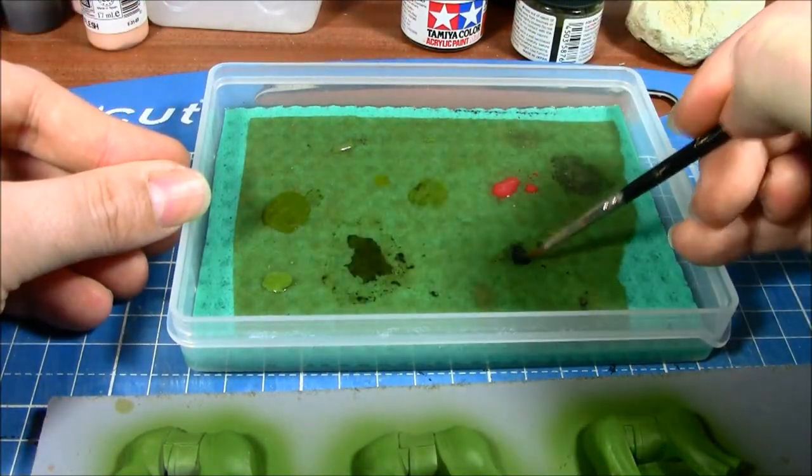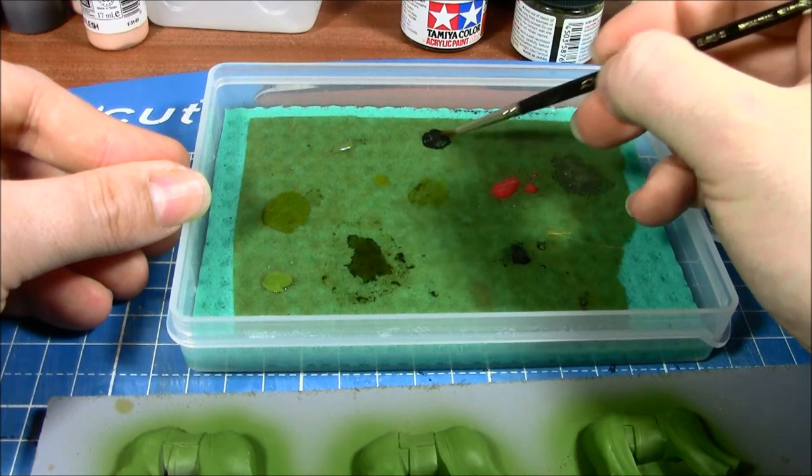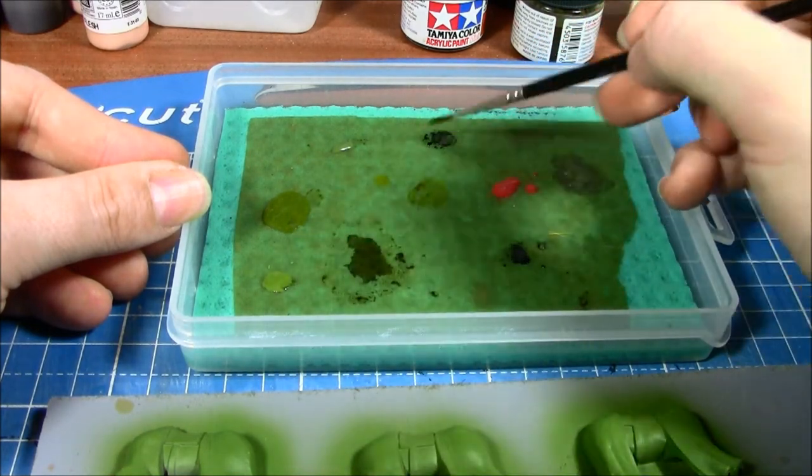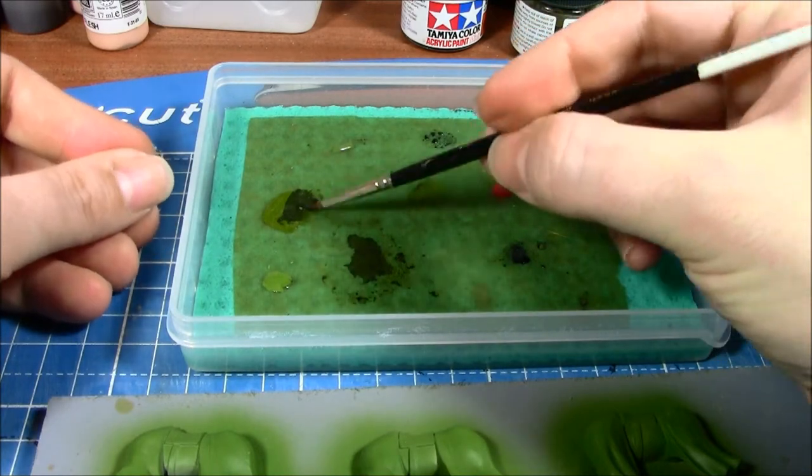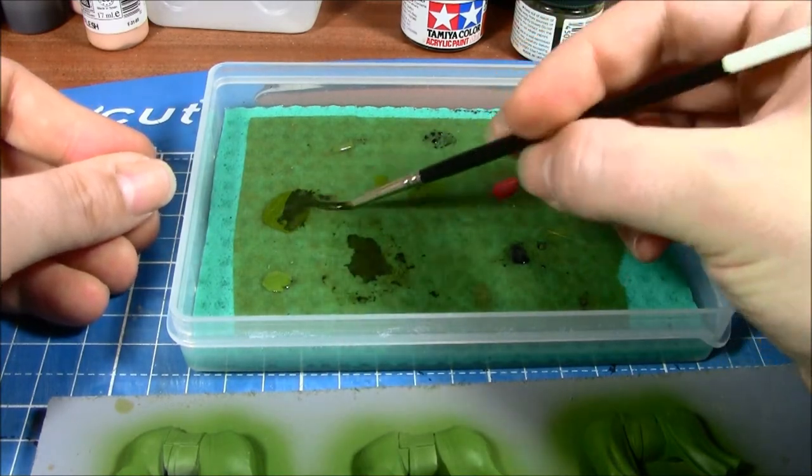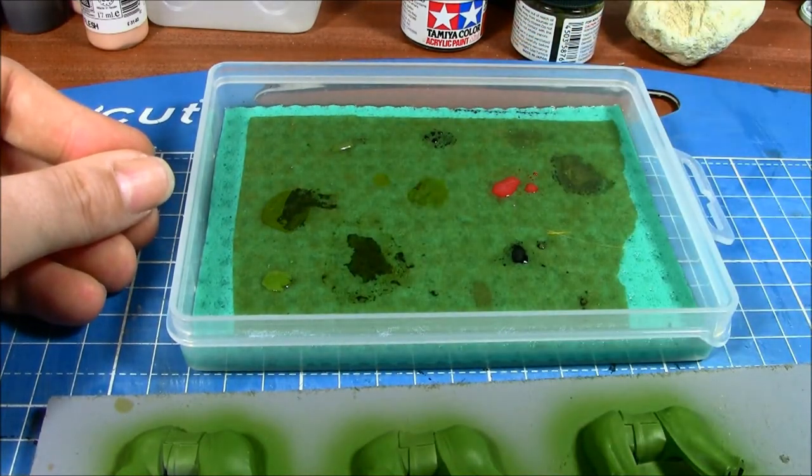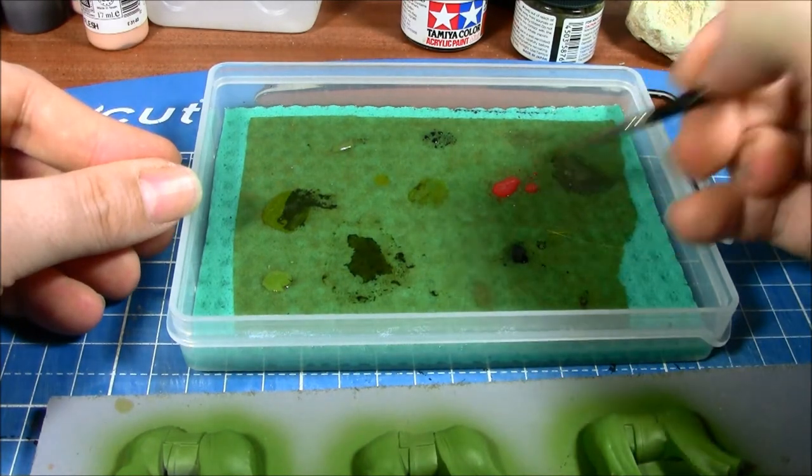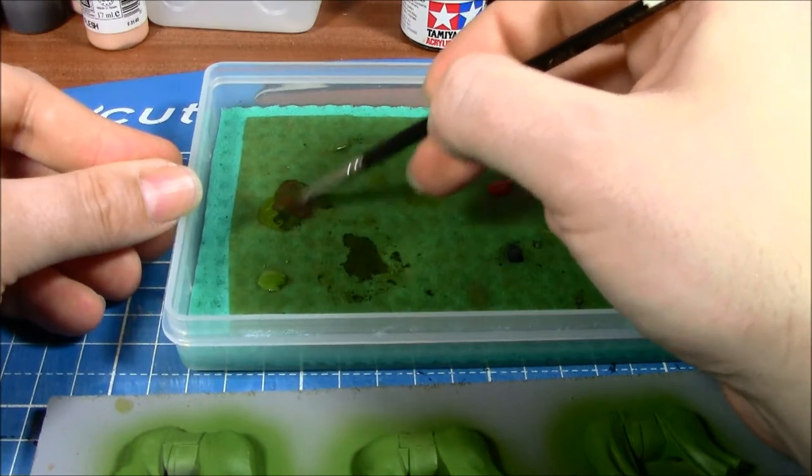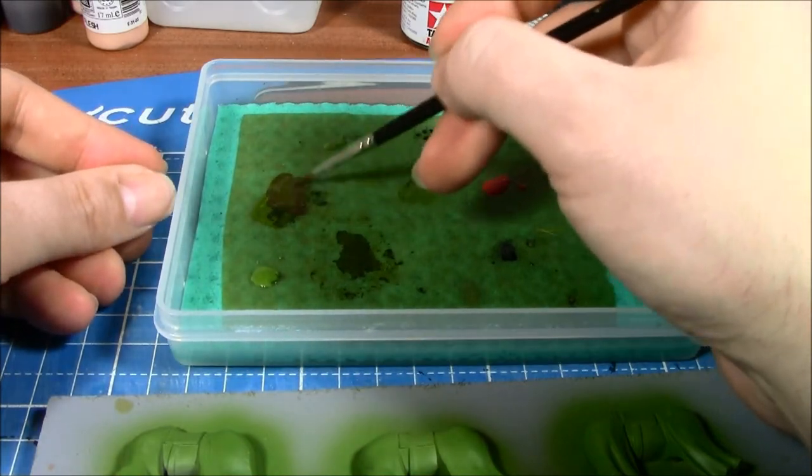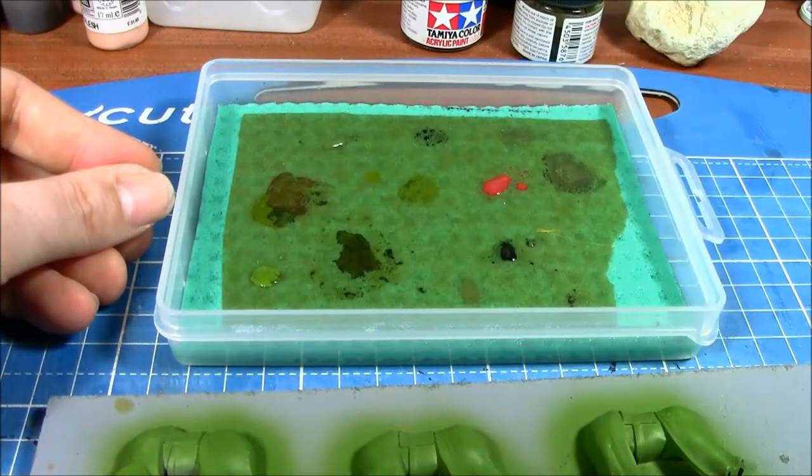If you just mix green with black you end up with quite a dark color like that. It's very desaturated. There's no real color to it. But if you add in a bit of red as well, you end up with, if you get the mixture right, a deeper sort of green if you can see that.